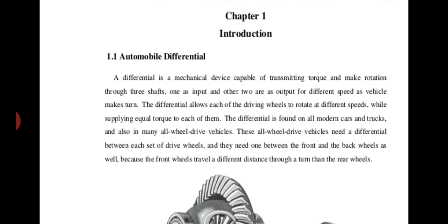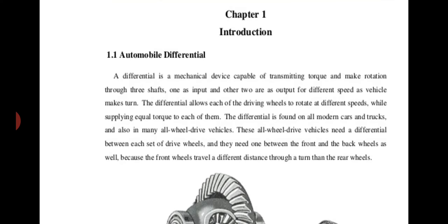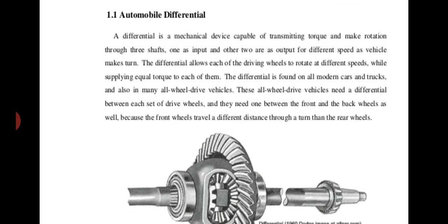A differential is a mechanical device capable of transmitting torque and rotation through three shafts — one as input and the other two as outputs — at different speeds. As a vehicle makes a turn, the differential allows each of the driving wheels to rotate at a different speed while applying equal torque to each of them. This is the most important thing. The differential is found on all modern cars and trucks, and also in many all-wheel-drive vehicles.